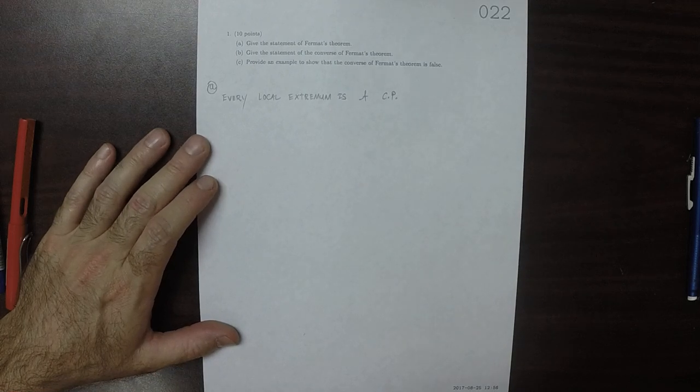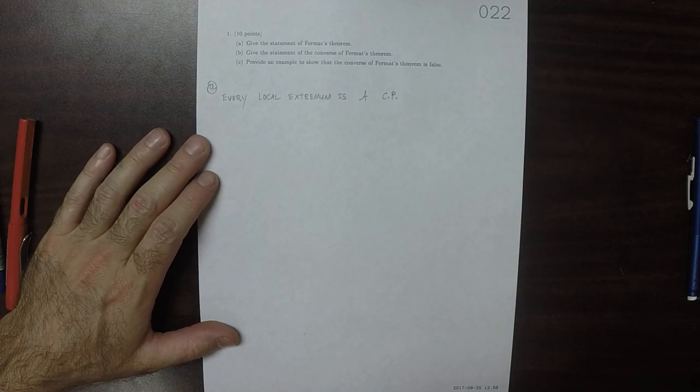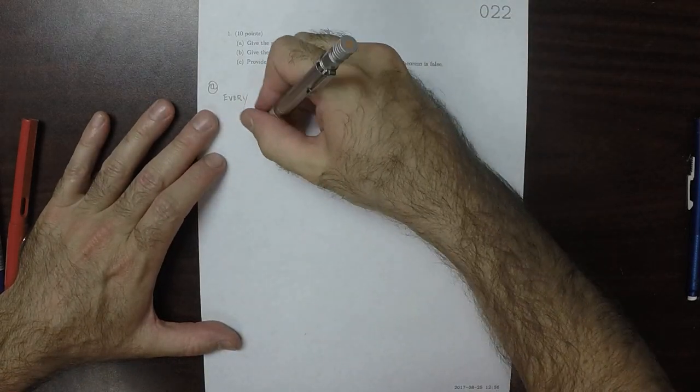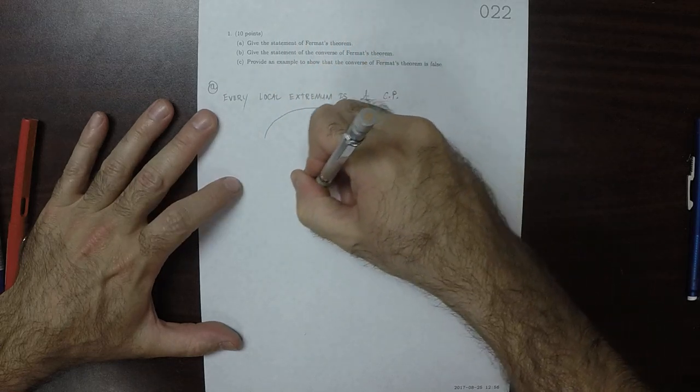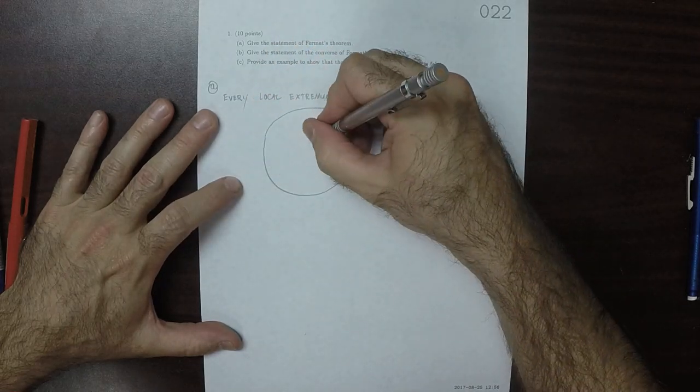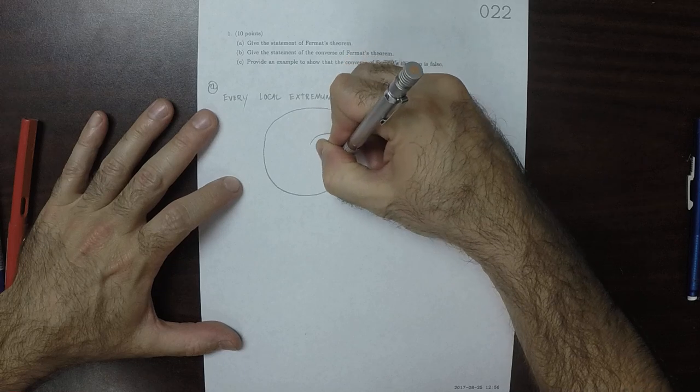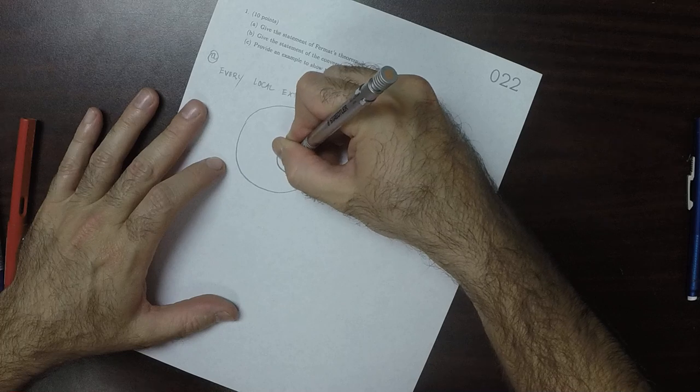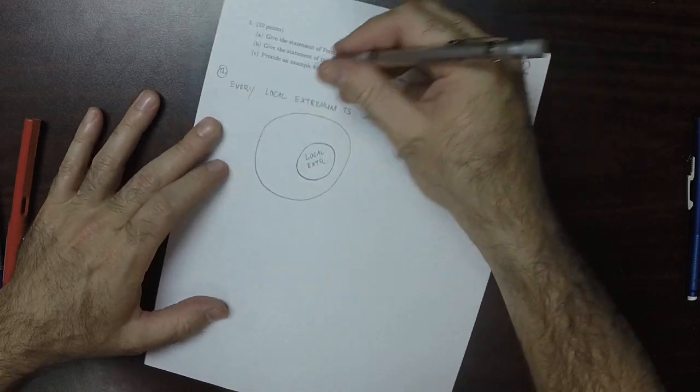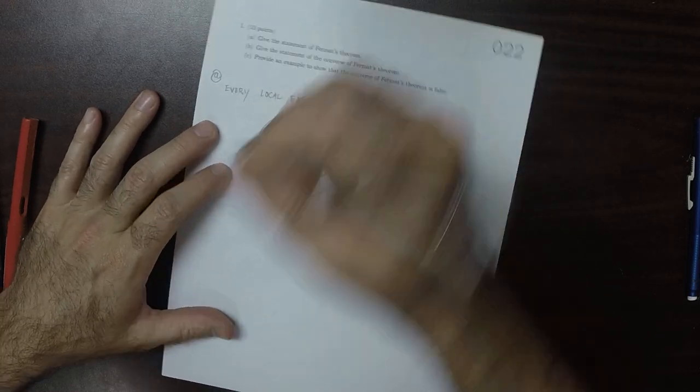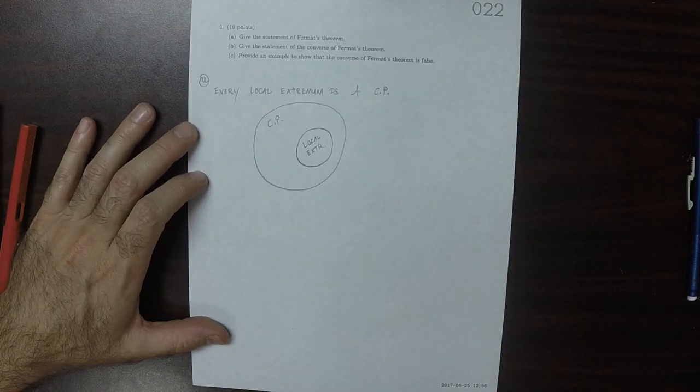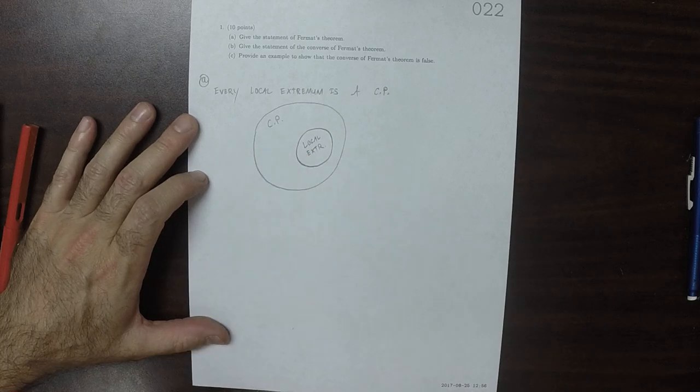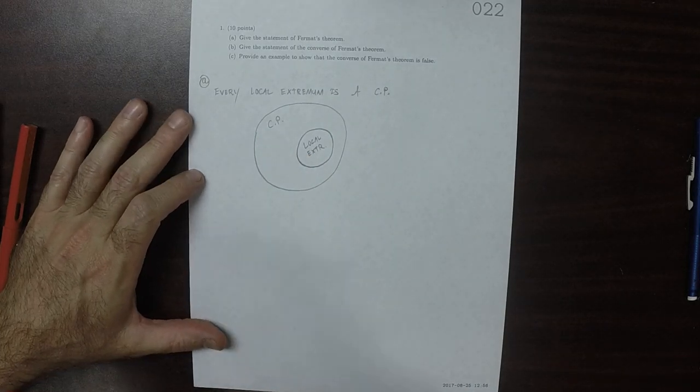So Fermat's theorem kind of looks like this. It's saying that if you've got a local extremum, all of these must be critical points. So the set of all local extrema is contained in the set of all critical points.